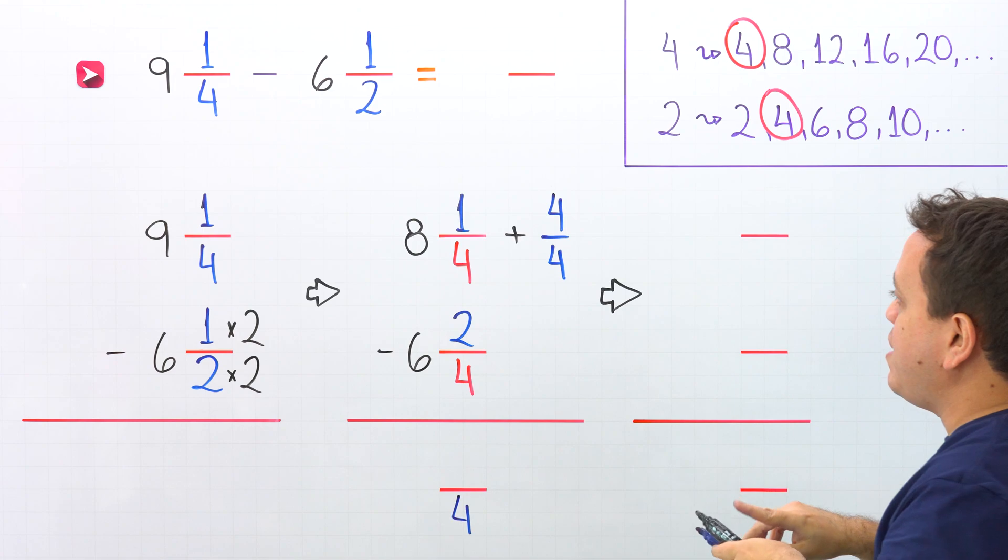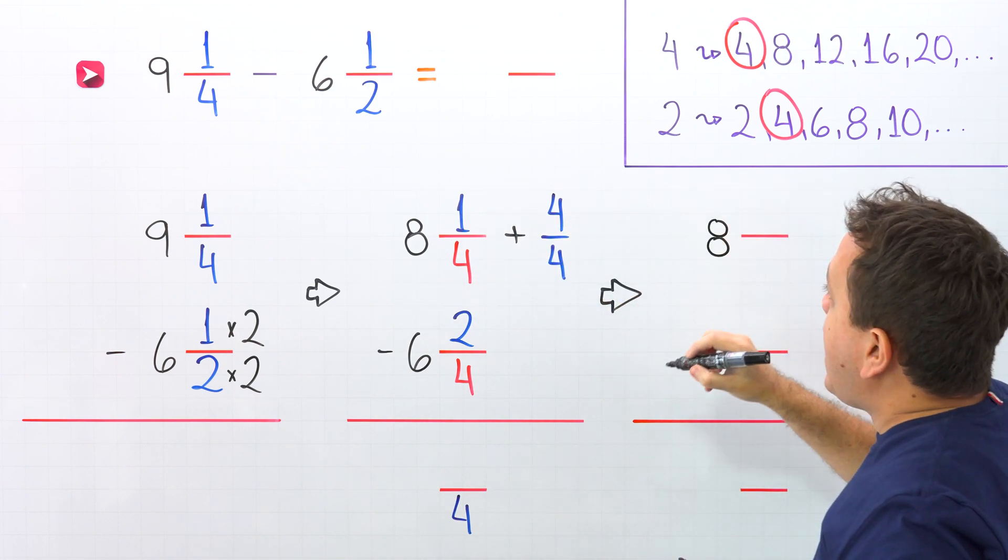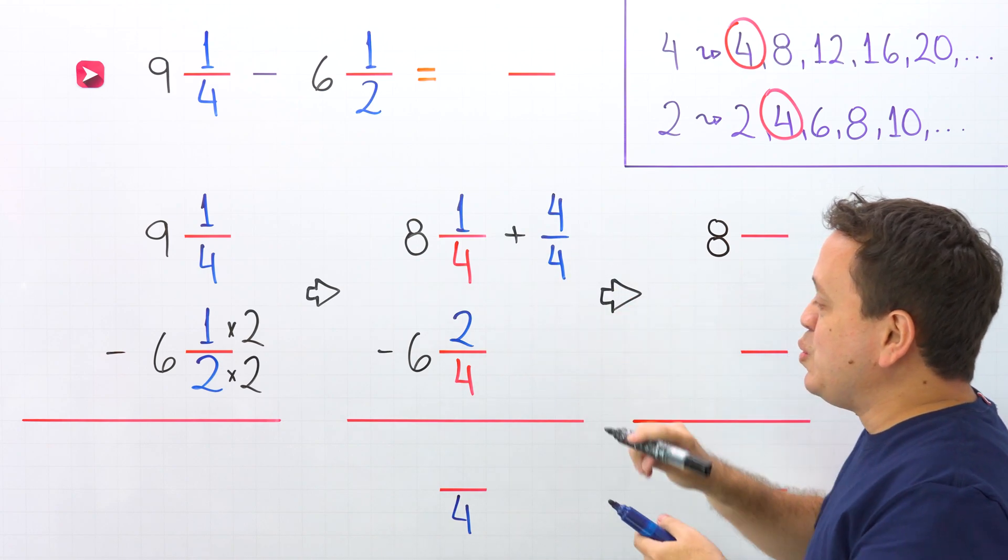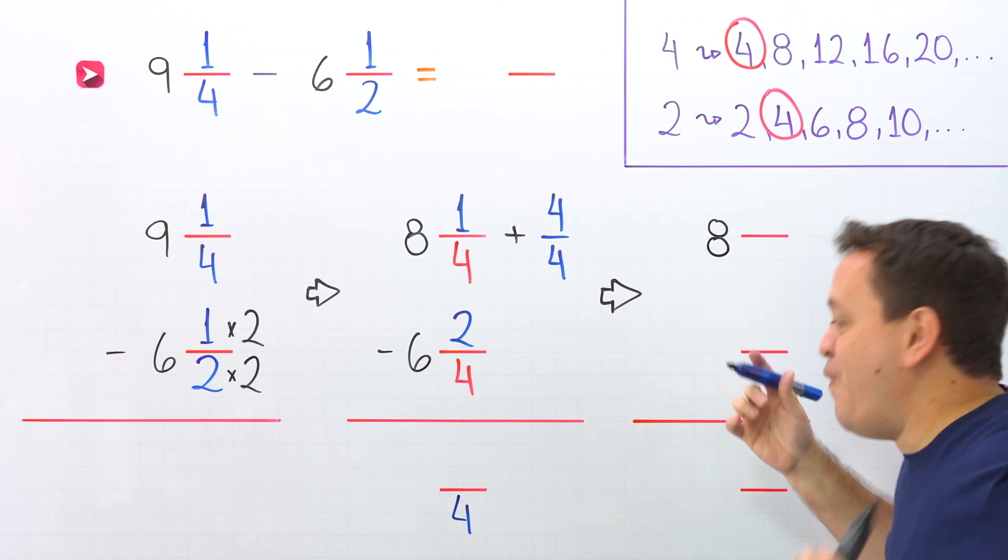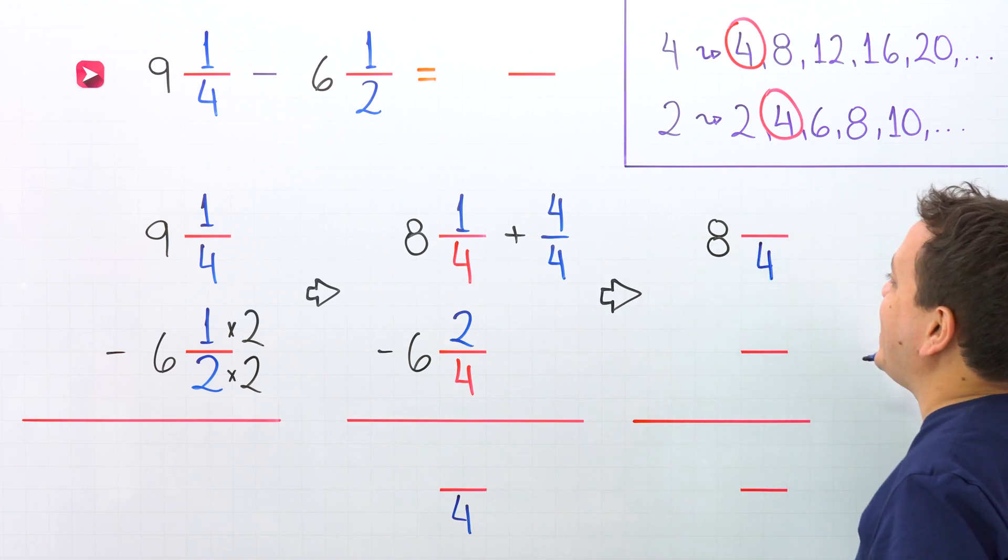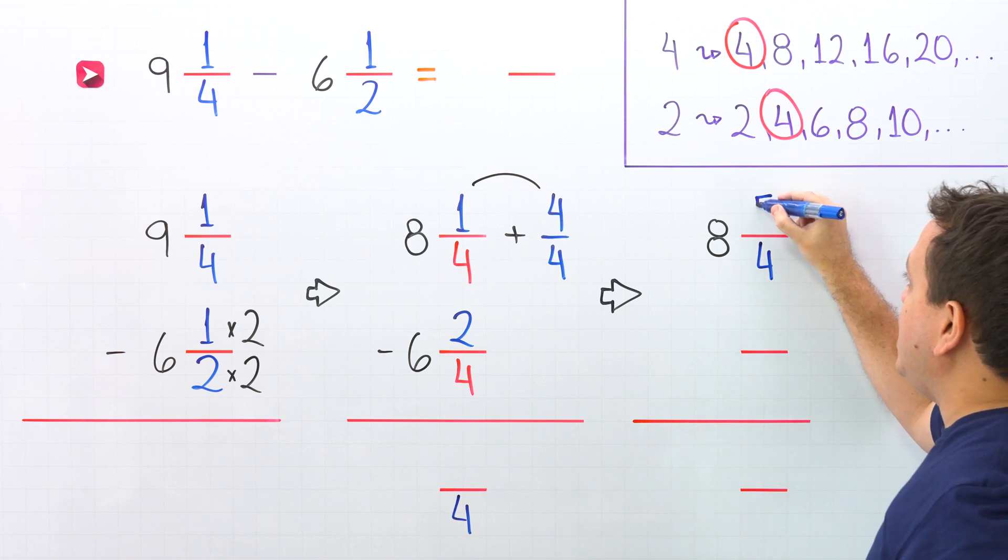Now it's gonna be really easy. Let's continue with the whole number 8. And then we need to add these two fractions with like denominators. 4 on this side, and we continue by adding the numerators. And 1 plus 4 gives us 5.